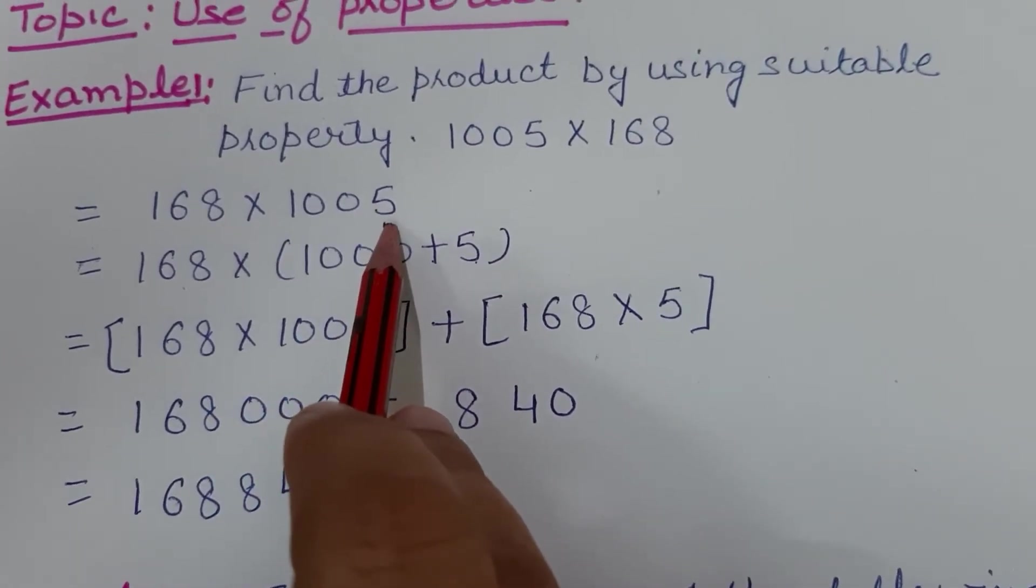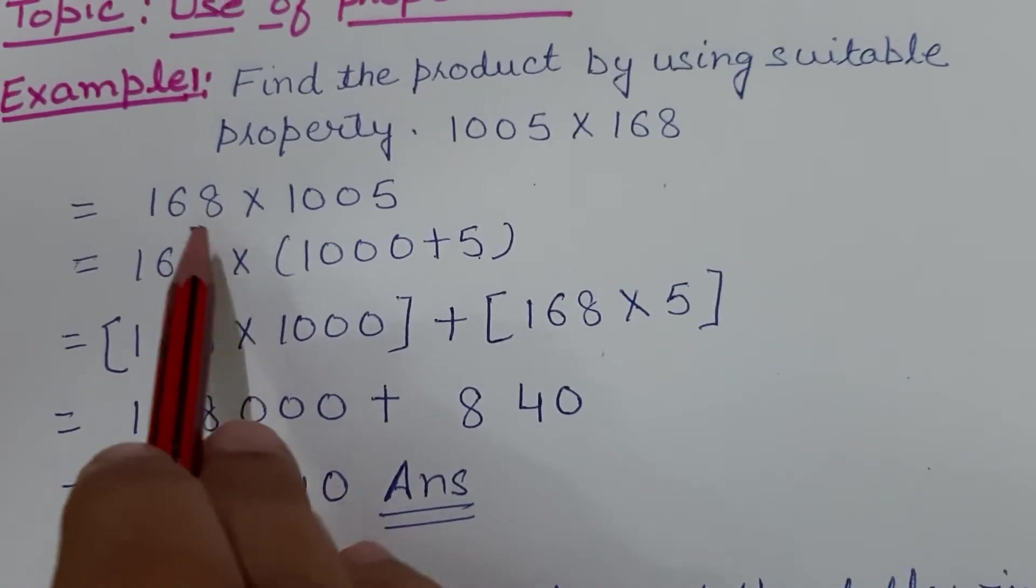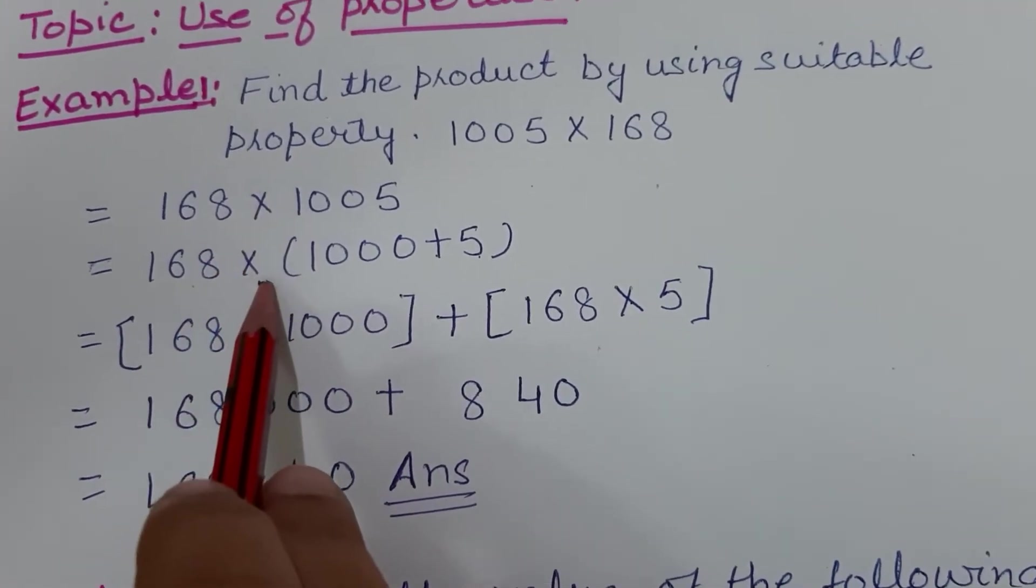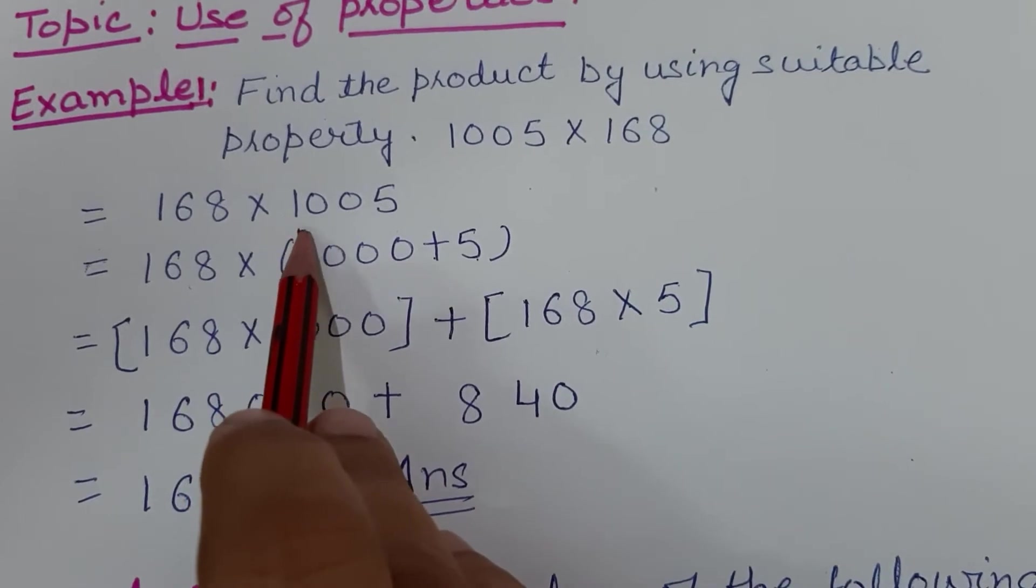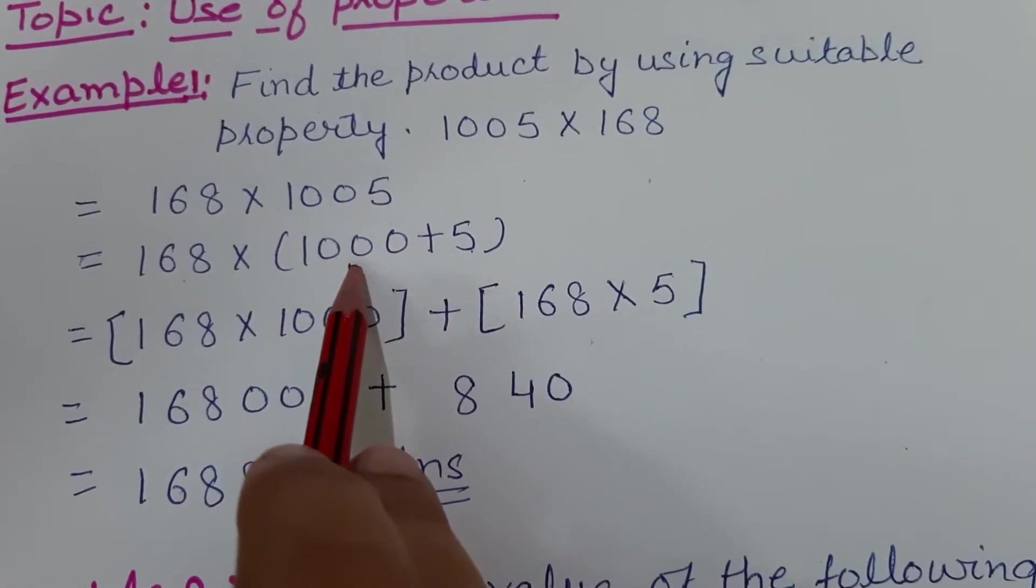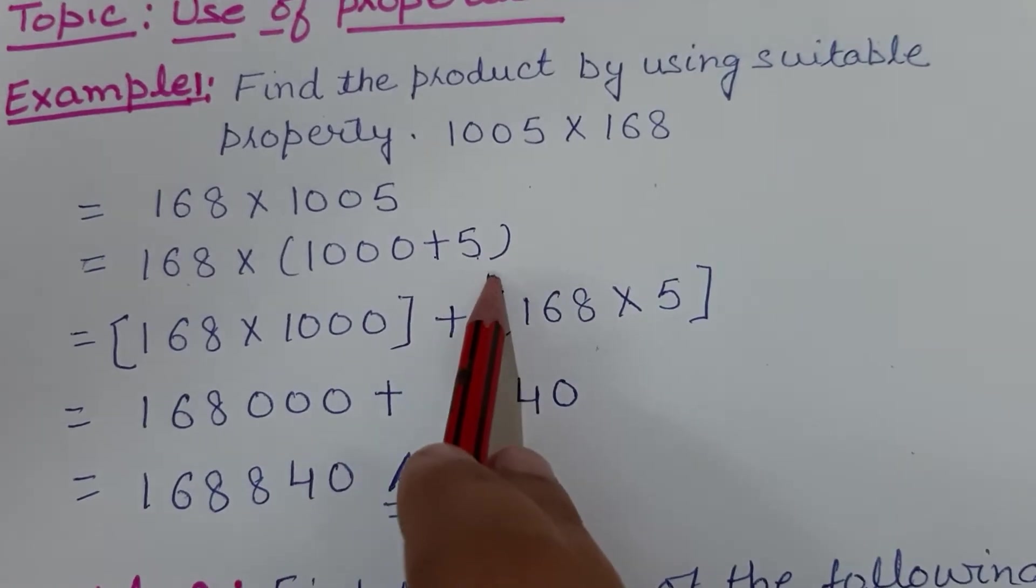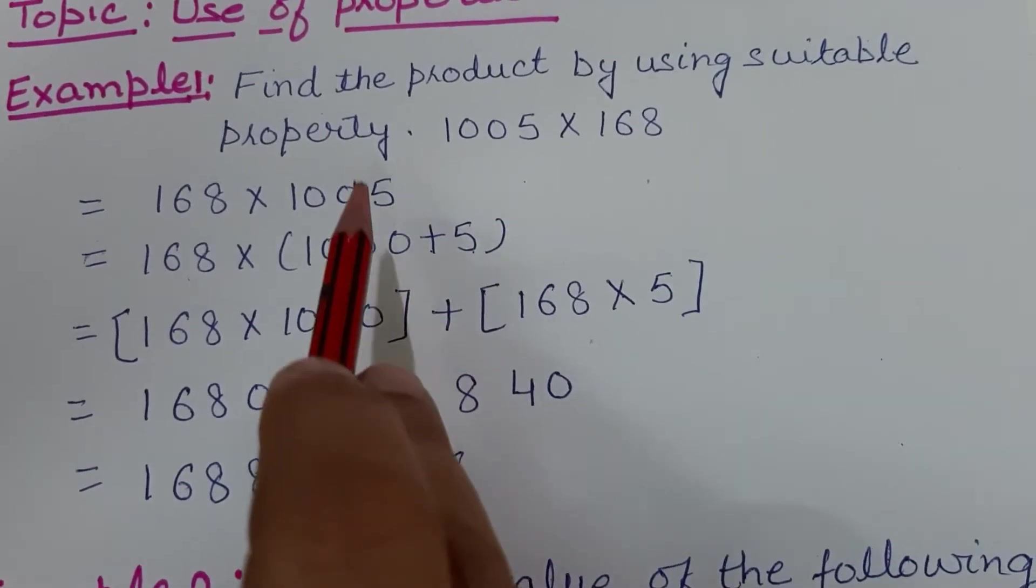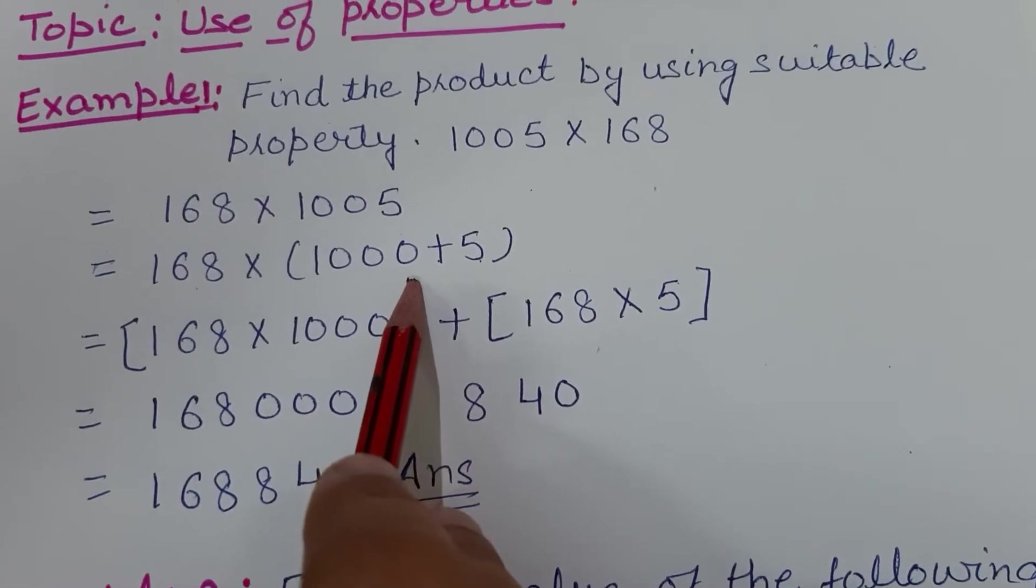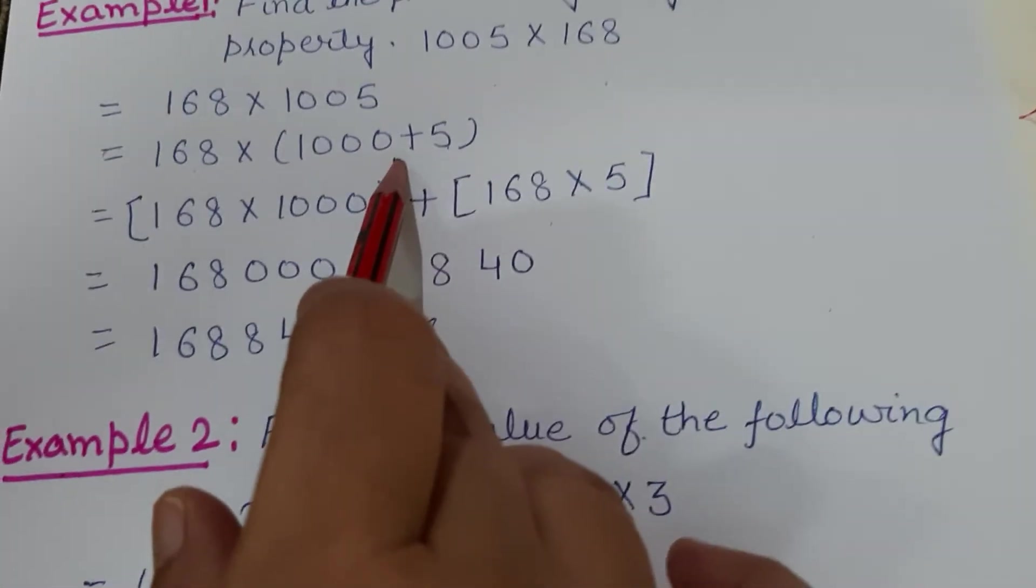We can break 1005 as 1000 plus 5—we can write it in expanded form. After breaking this number, in the next step we will multiply 168 with both these numbers. Why with both? Because they are in a bracket.